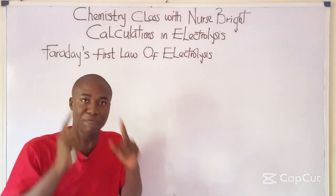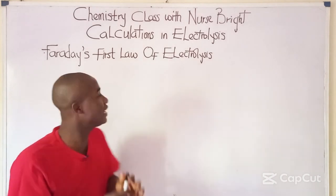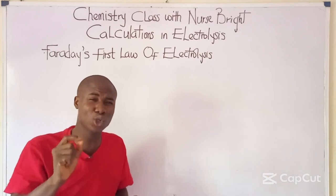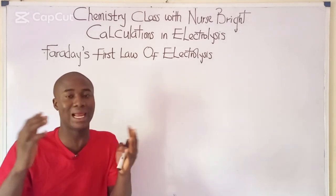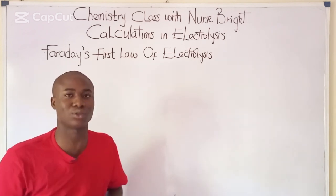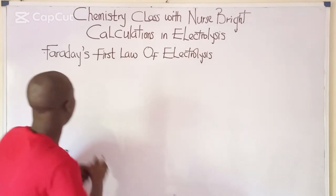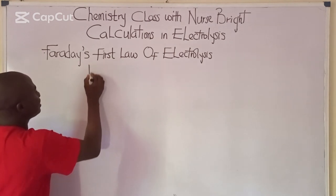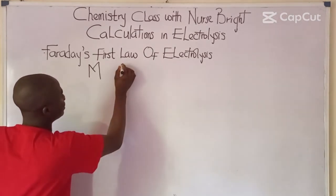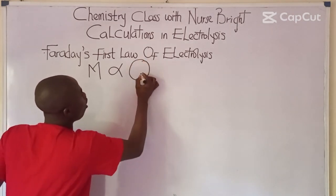We have to know what Faraday's first law of electrolysis states. The Faraday's first law of electrolysis states that the mass of a substance deposited during electrolysis is directly proportional to the quantity of electricity that passes through the electrolyte.